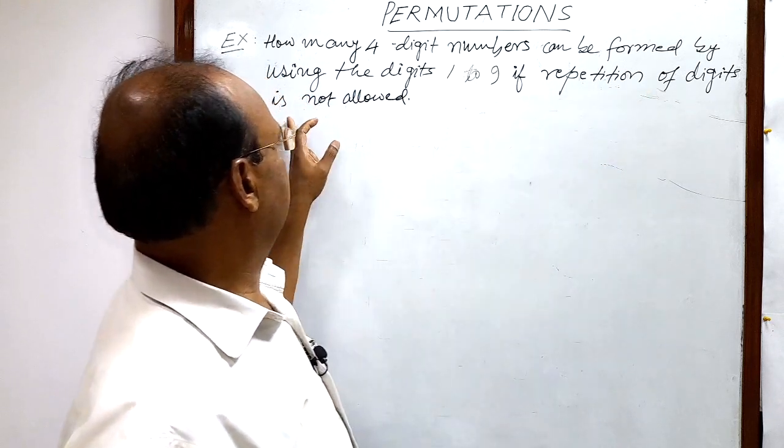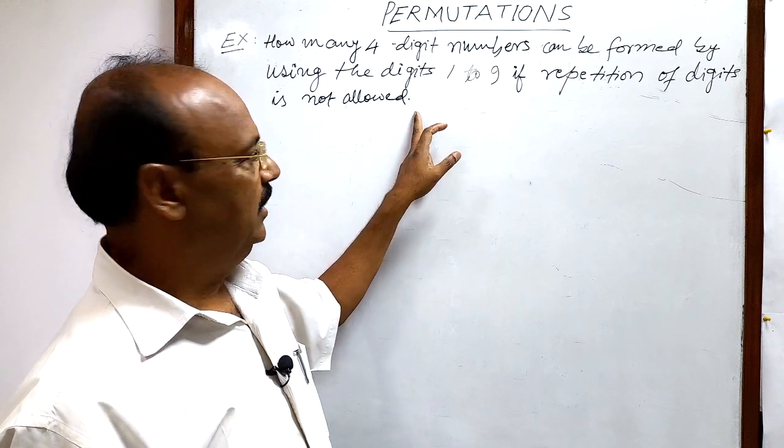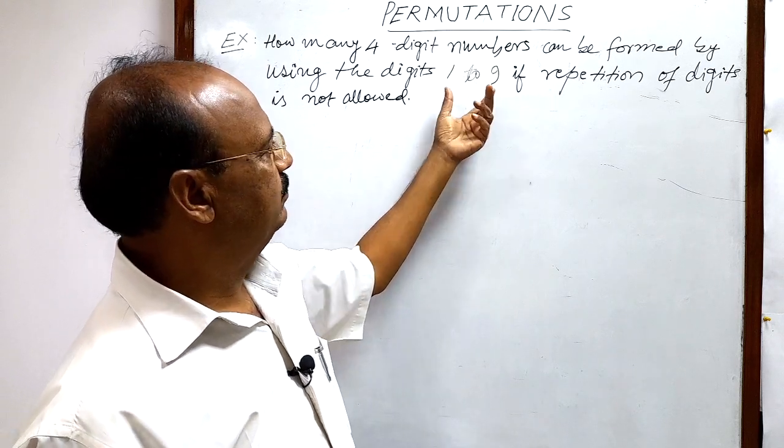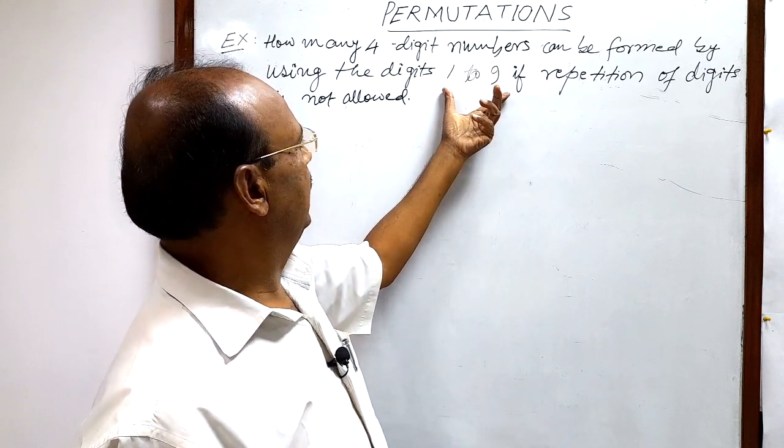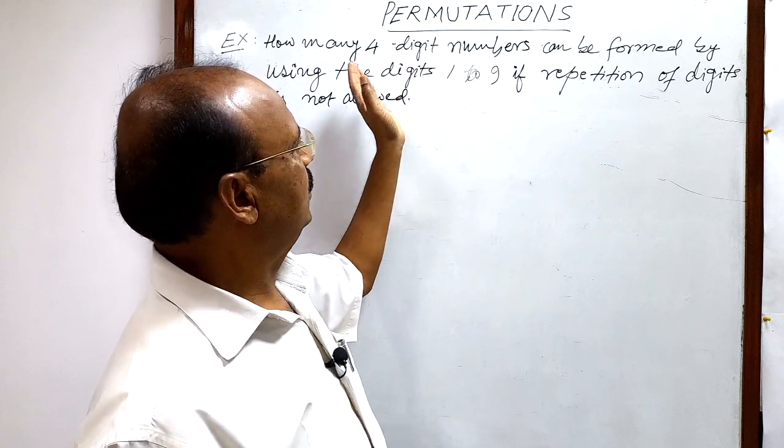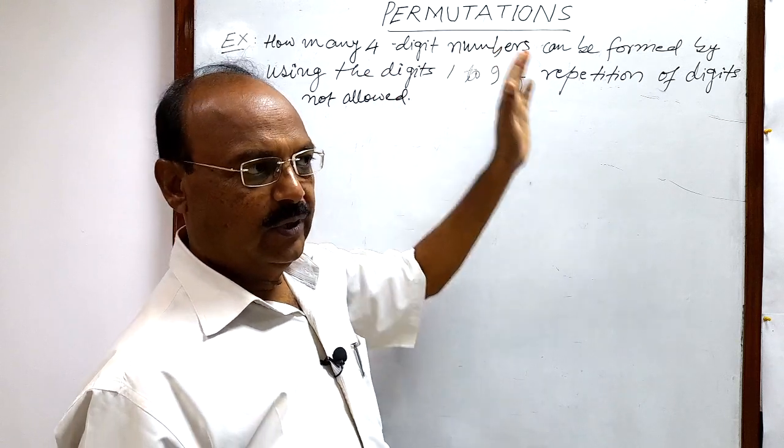If repetition of digits is not allowed, it means out of these nine digits we have to form four-digit numbers. What does it mean?